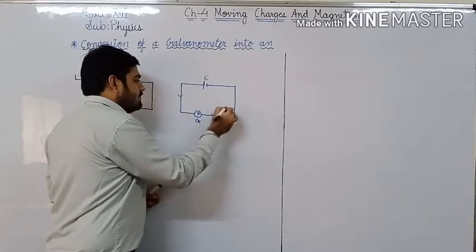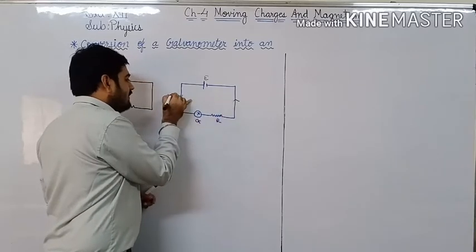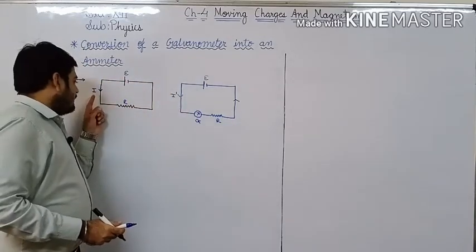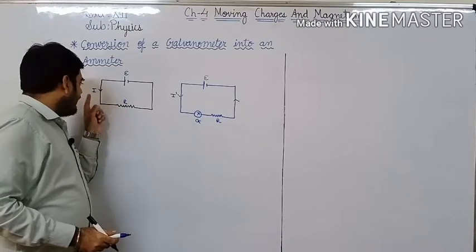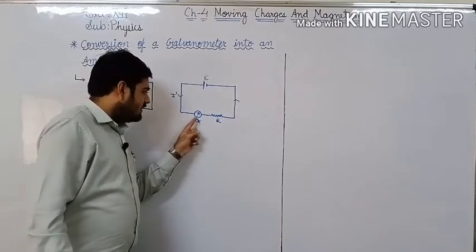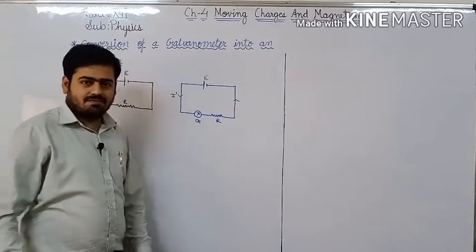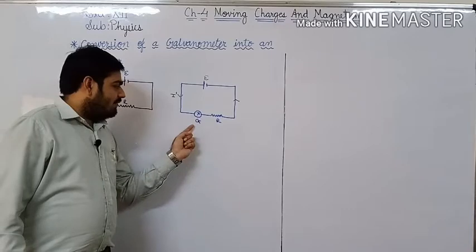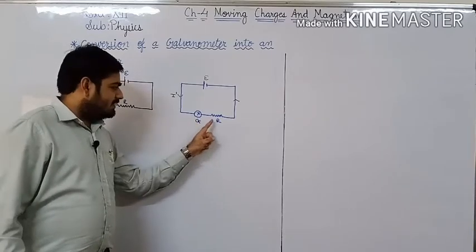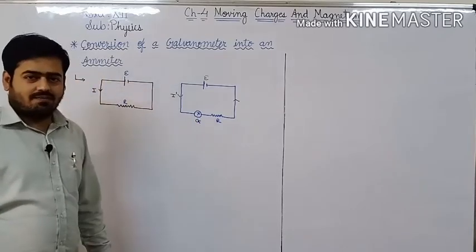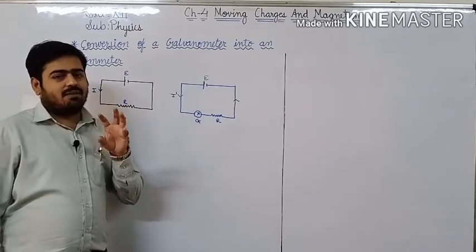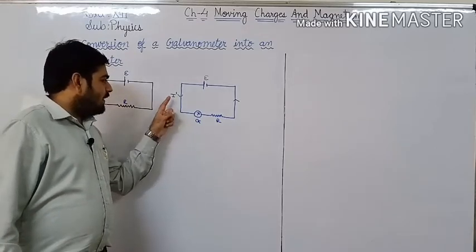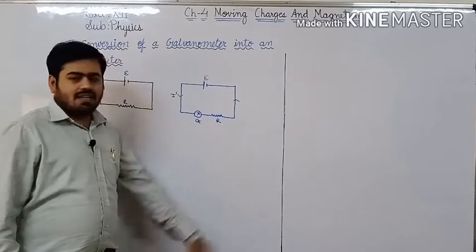Now, current flowing through this circuit will be I dash. Here, current flowing through resistance R was I. Now, current flowing through this resistance R is I dash. Why? Because now we have connected galvanometer in series with resistance R. Why have we connected this galvanometer in series with resistance R? Because we want to find current passing through this resistance R.